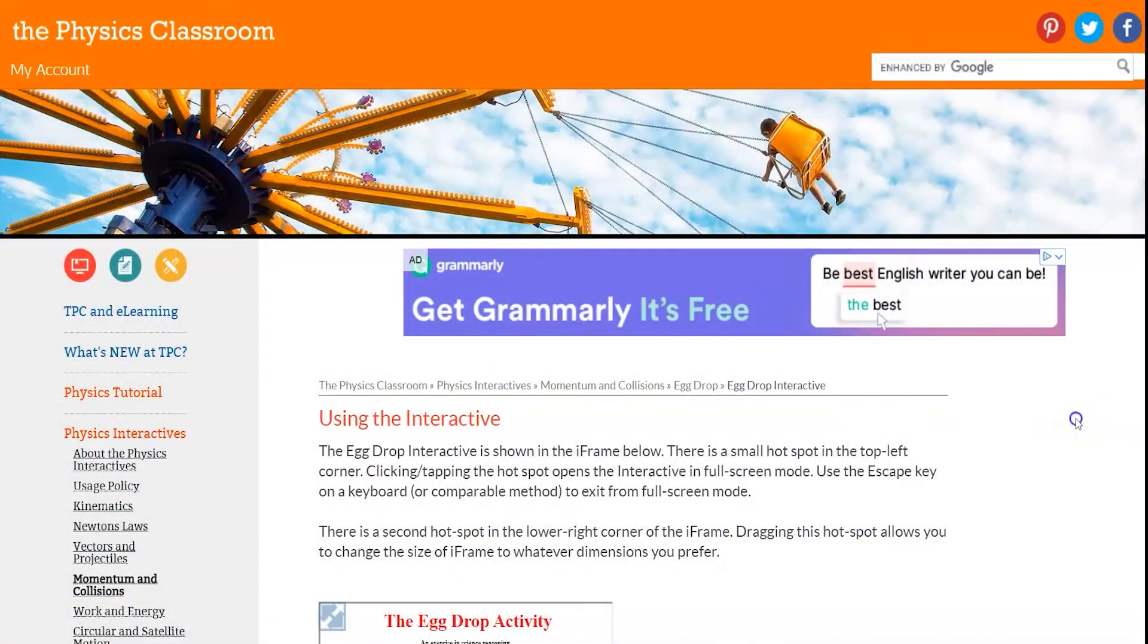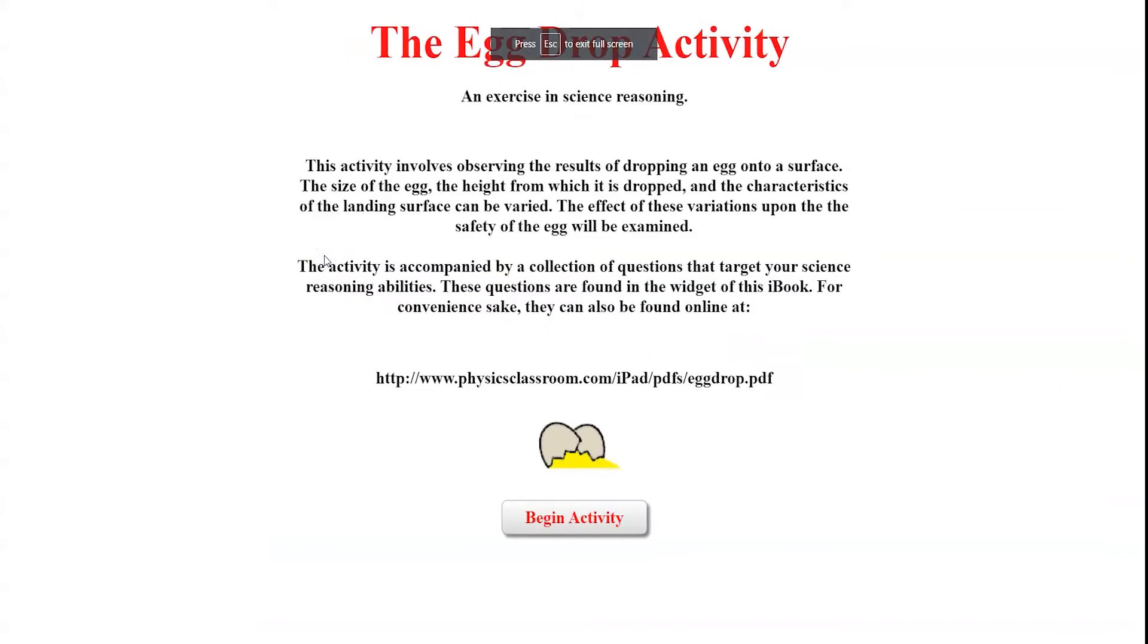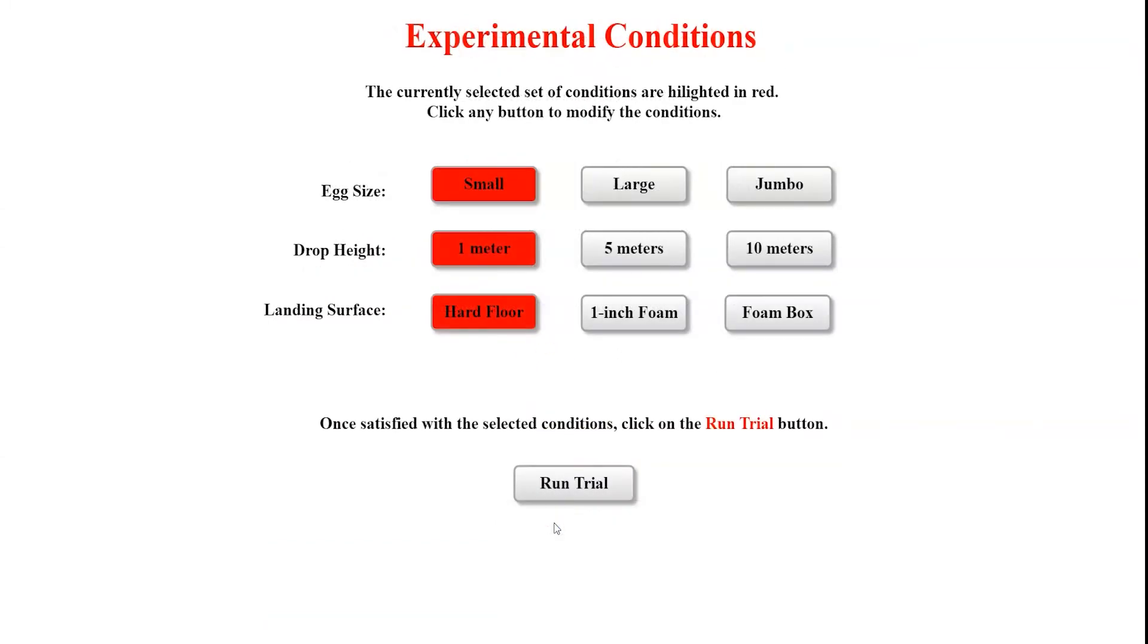Open the link to the virtual egg drop simulator. Scroll down to the simulator and expand for convenience. Once it loads, click begin activity. This will open the experimental conditions. Your prototype needs to survive a 5-meter drop, so all drops will be from 5 meters.